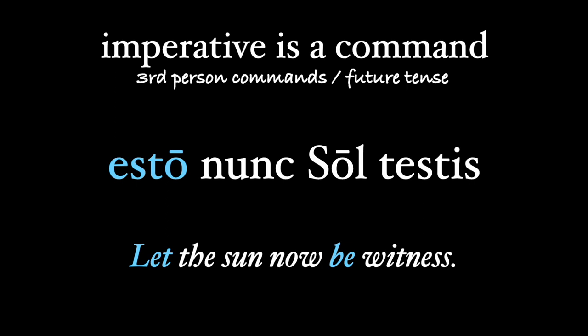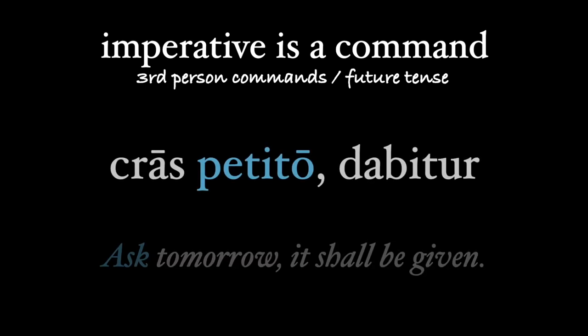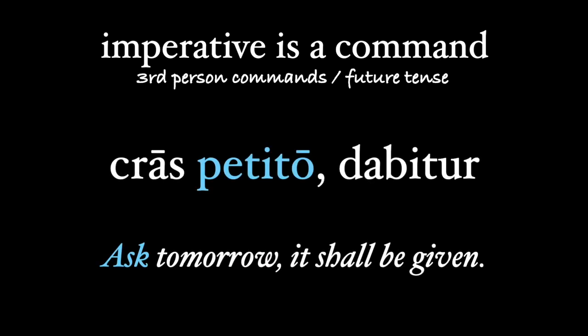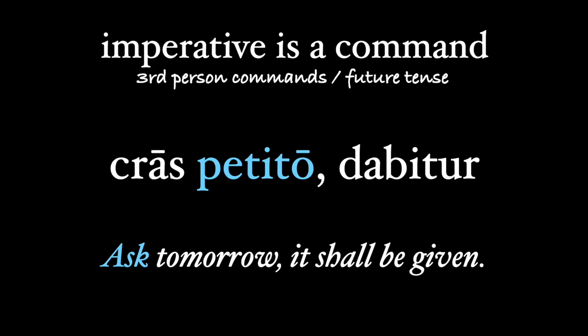So 'cras petito, dabitur' — 'ask tomorrow, it shall be given.' 'Petito' is our future imperative; the -to ending is how you recognize it. With the adverb 'cras,' meaning tomorrow, and the future tense 'dabitur,' very clearly indicate that this imperative has a future sense. But English doesn't have this fine a distinction in its commands, hence our translation looking like a present imperative.